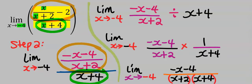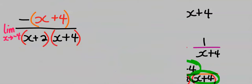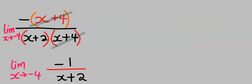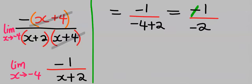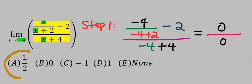Simplifying carefully, we rearrange the numerator and denominator to cancel the factor (x + 4). This can now cancel this. Taking the limit of the remaining function, the negatives cancel each other, and our answer is 1 over 2. From the options, the answer is A.